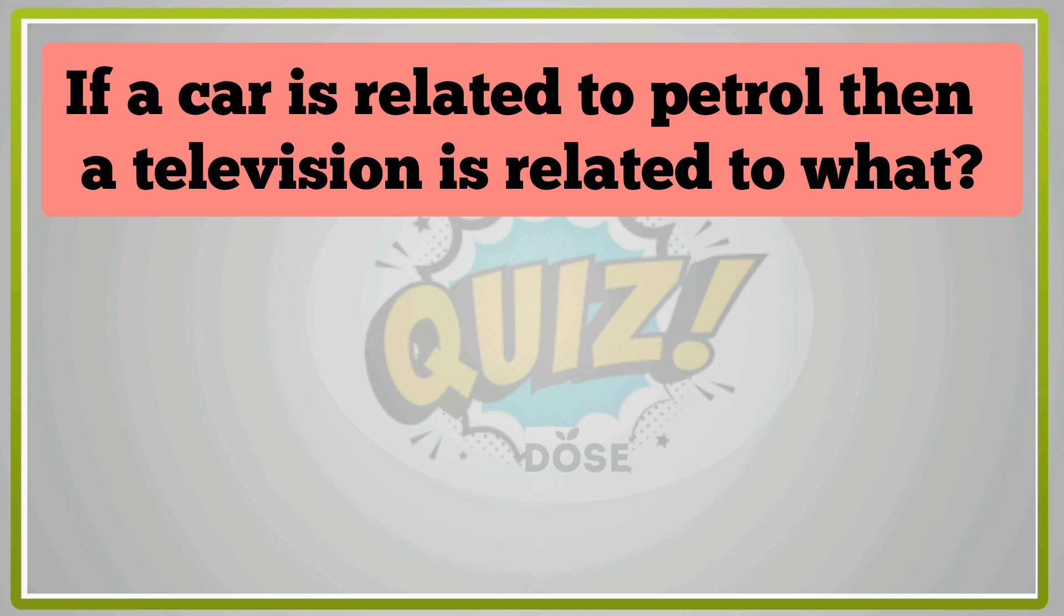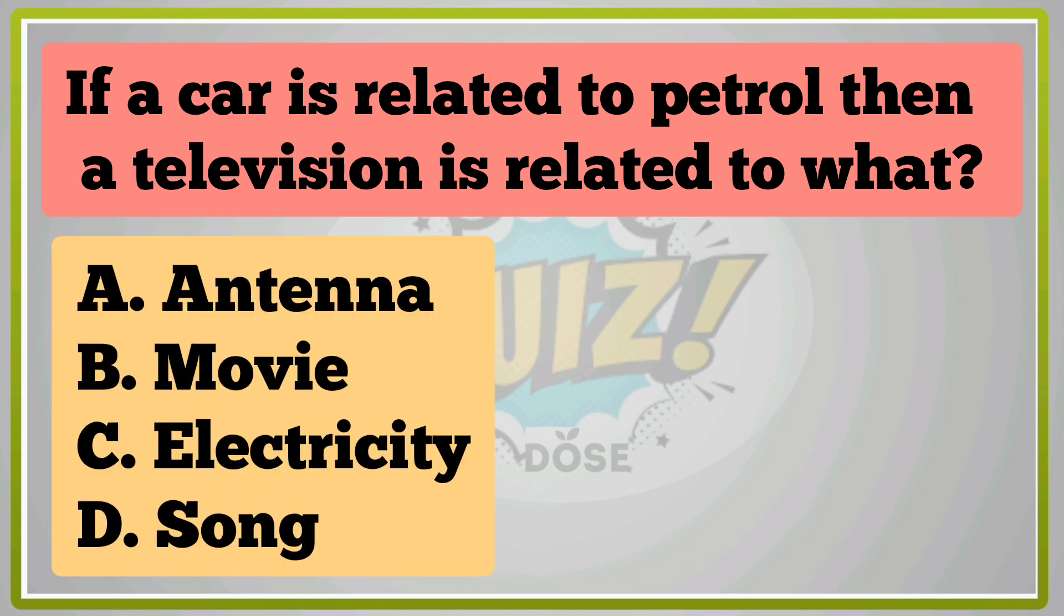If a car is related to petrol, then a television is related to what? A, Antenna. B, Movie. C, Electricity. D, Song. A, Antenna is right answer.